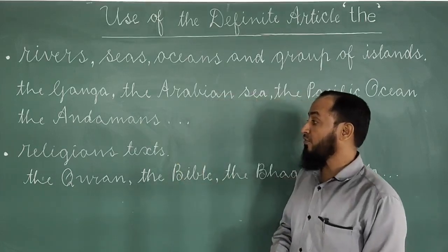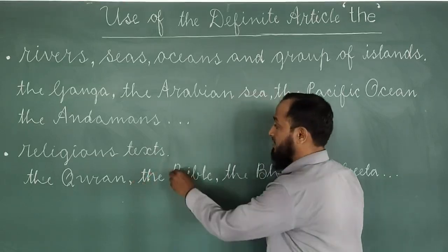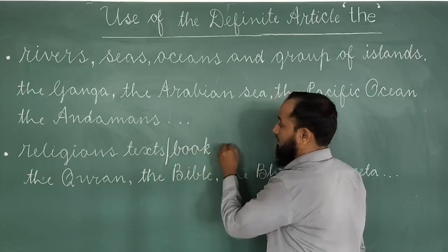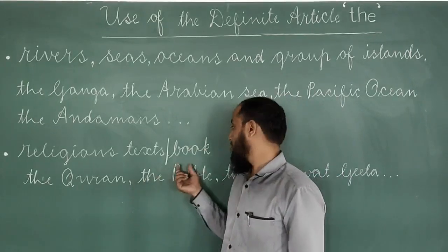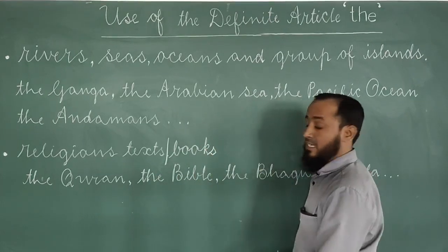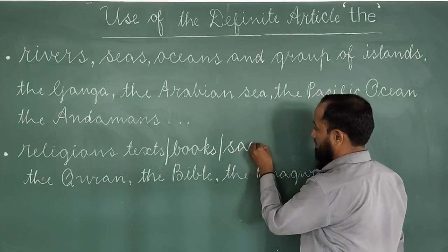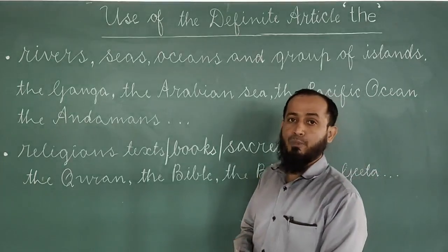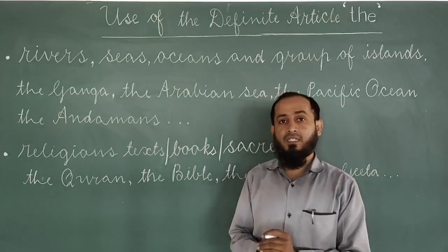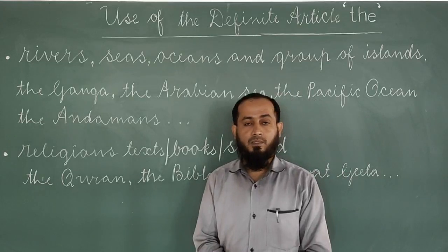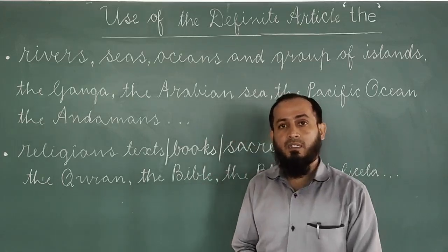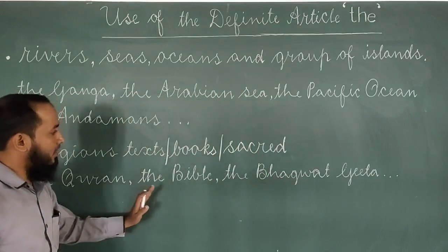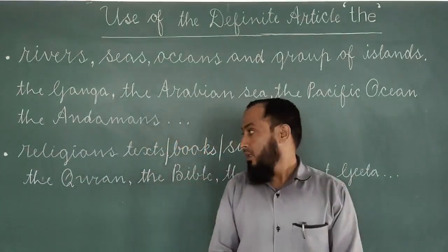Next: 'the' is used before the names of religious texts, also called sacred or holy books. Before holy books, we should use the article 'the'. For example: the Quran, the Bhagavad Gita, the Bible, and the Ramayana. So the Quran, the Bible, the Bhagavad Gita — all take 'the'.